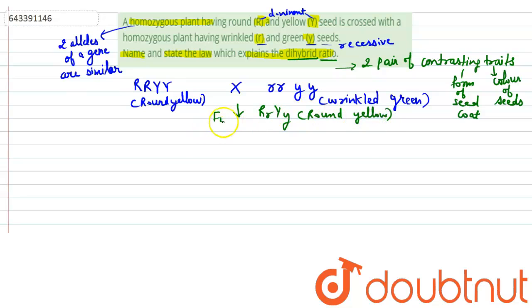But in F2 generation, when F1 plants are self-pollinated, then the phenotypic ratio is 9 is to 3 is to 3 is to 1.